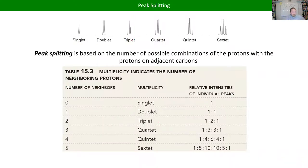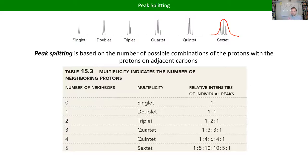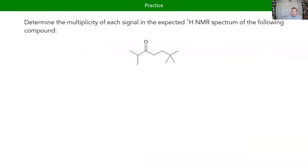That general bell-curve shape also tells you that a bunch of peaks right next to each other that follow a bell curve shape are probably all one signal. So let's practice to get the hang of this — it's easier to start from a structure and predict what the NMR should look like than the other way around. If we have this compound here, let's figure out how many signals we should see, what the multiplicity (number of peaks in the peak splitting) is, and what the integrals might look like.